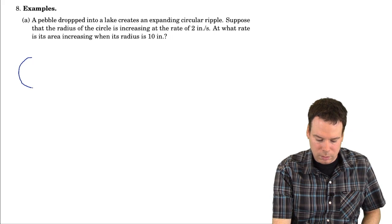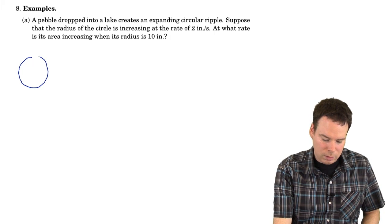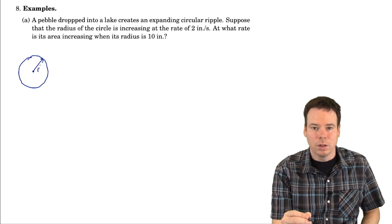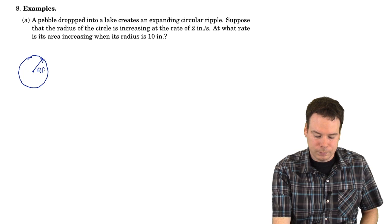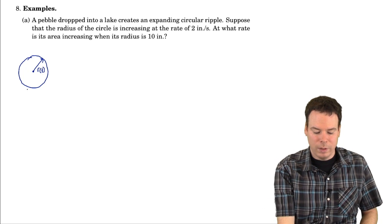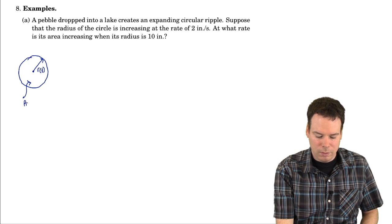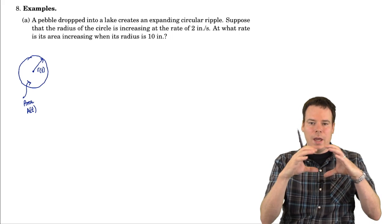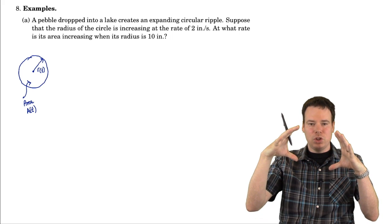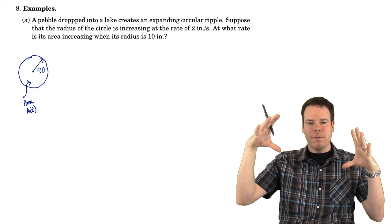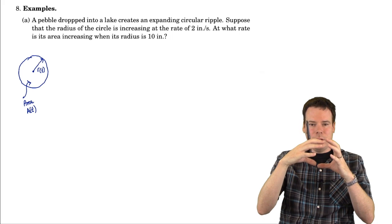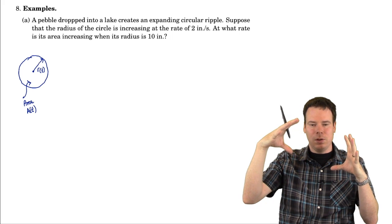We've got this circle that's expanding in the water. If it's expanding, it means that its radius is going to be changing, so its radius is going to be a function of time. And since the radius is changing, it means that the area is also going to be a function of time. The question is: if we know how fast the radius is changing, can we figure out how fast the area is changing? It should be related because the area is related to the radius.